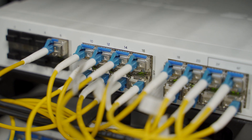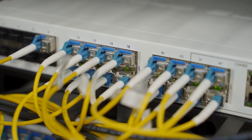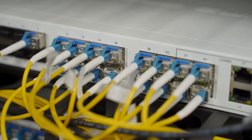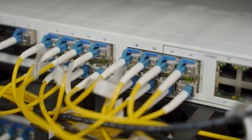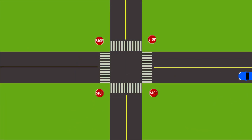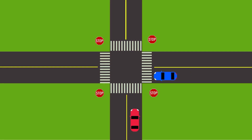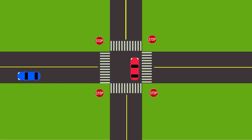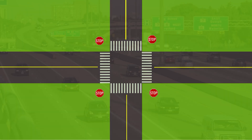A fibre optic cable can have a single core or two cores. A single core cable is half duplex, meaning it can only send or receive at one time. This is frequently used by service providers.